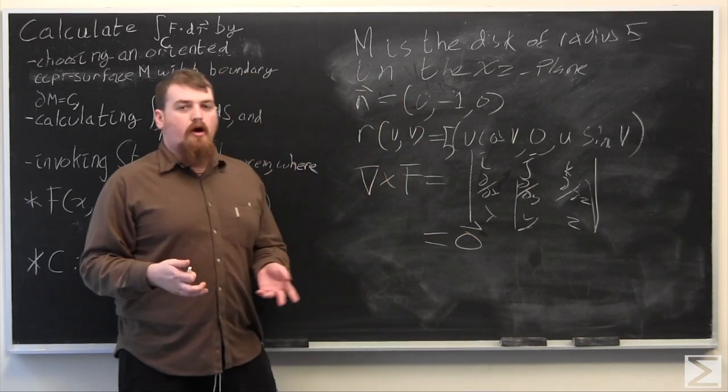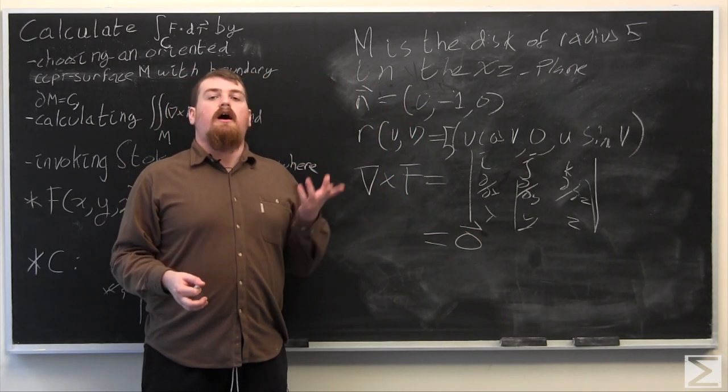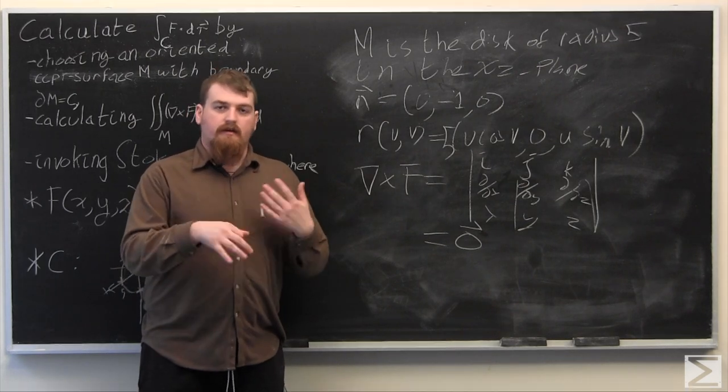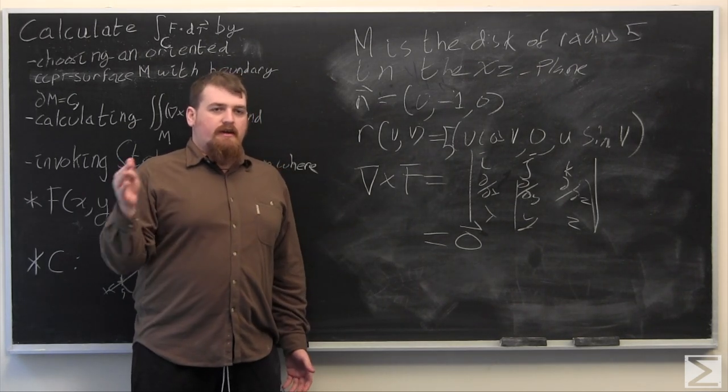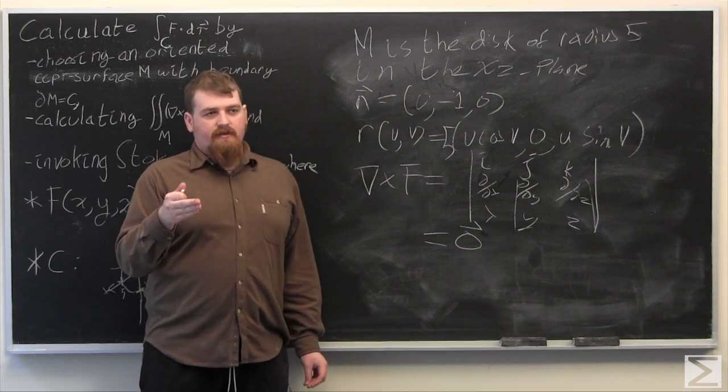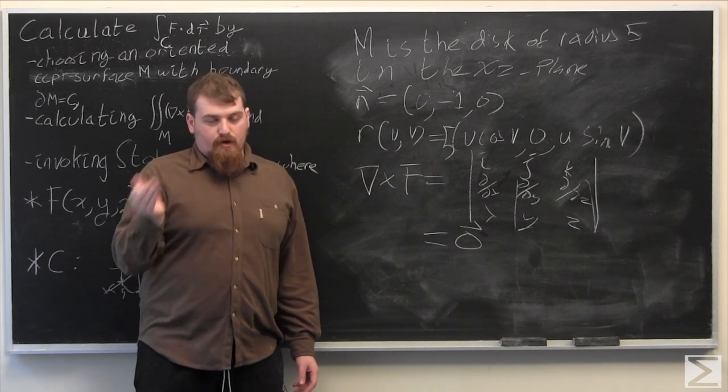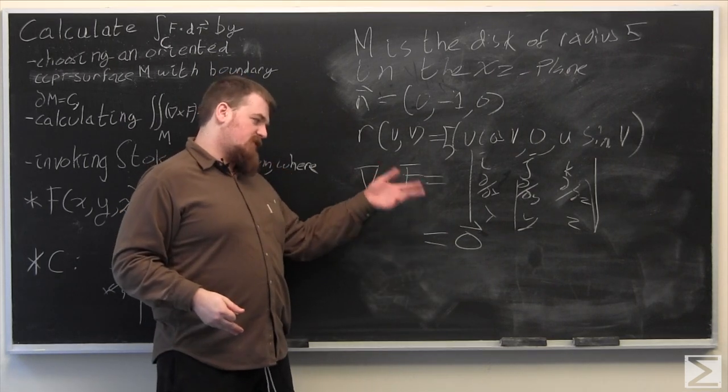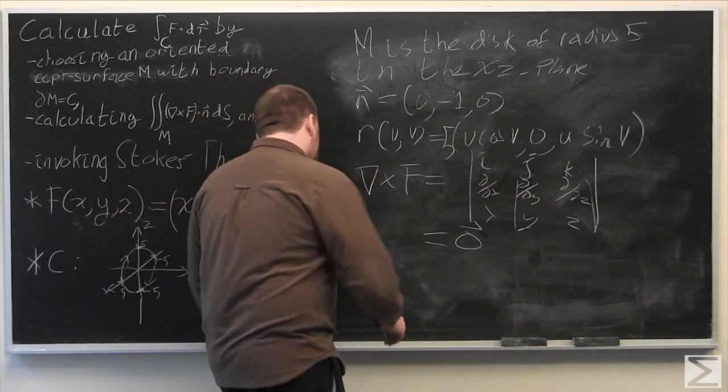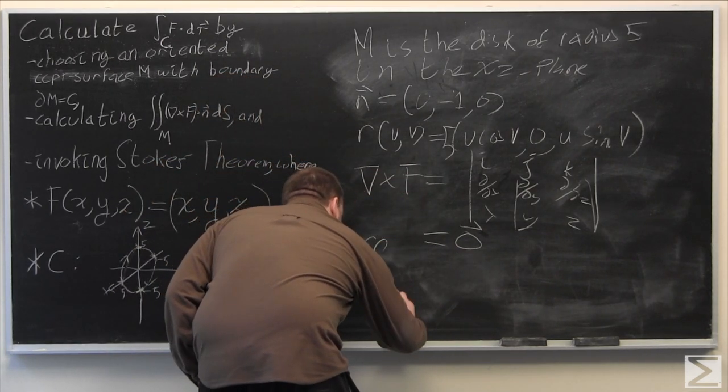And thus, no matter how we set up our parametrization of m, and no matter what the preimage of it within the domain r squared of the parametrization, the flux integral of the curl of f is always going to be 0. So write this.